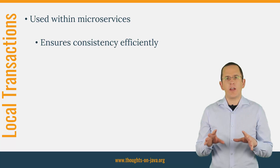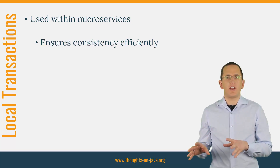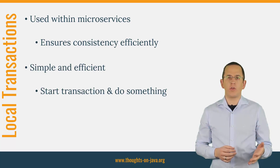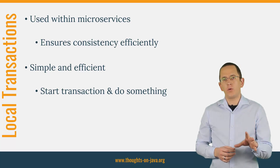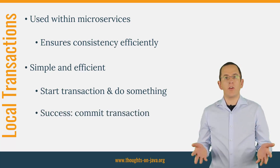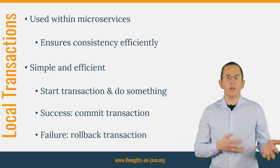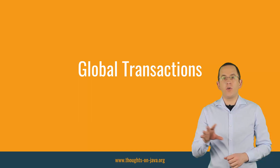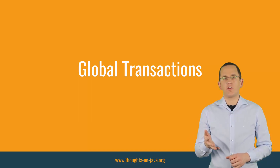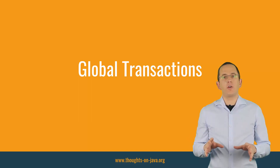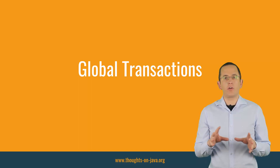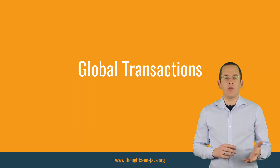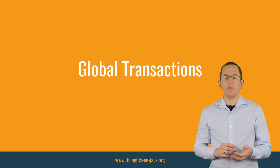A local transaction is very efficient. You or your container start a transaction before you interact with your database. If all of your operations were successful, you commit the transaction. Otherwise, you roll it back. Unfortunately, that's not the case for global or distributed transactions. They use a pattern called two-phase commit. This pattern describes a complex process that requires multiple steps, and that's the main reason why global transactions are slow and why you should avoid them in a microservice architecture.